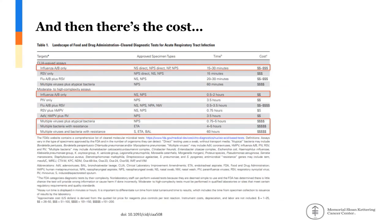We must also take into account the cost of testing. Molecular tests tend to be more expensive than other tests. As an example, testing for influenza using a CLIA-waived assay with rapid turnaround can cost anywhere from $26 to $100 depending on the testing method — and this is the cost of the test itself, not the patient cost. When you move to moderate and high complexity molecular assays, including syndromic testing panels, costs are significantly higher.